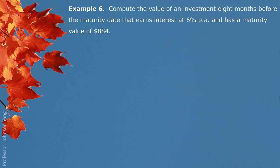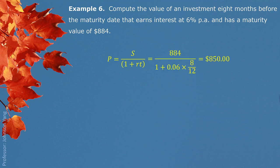Example 6: compute the value of an investment eight months before the maturity date that earns interest at 6% and has a maturity value of $880. We read out: maturity value, interest rate, and eight months time period. The question asks for the value of the investment at the beginning, which is the present value or principal. We use the present value formula, put the information in, finish the calculation, and get $850. We also show the alternative format using (1 + RT) to the negative 1 as exponent, which gives the same answer.